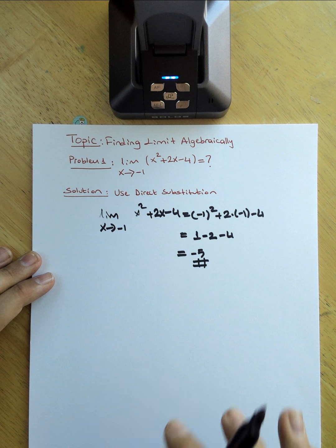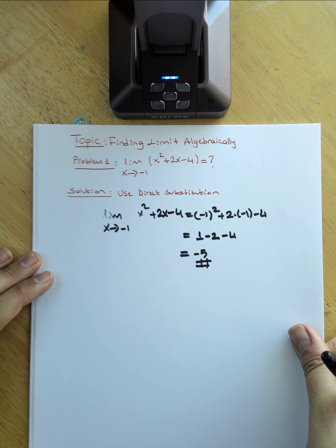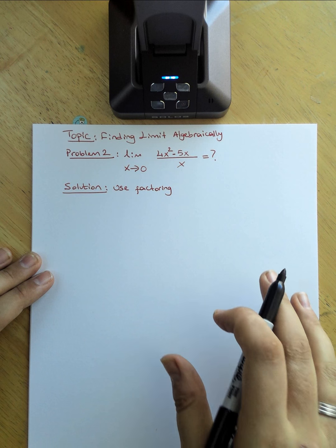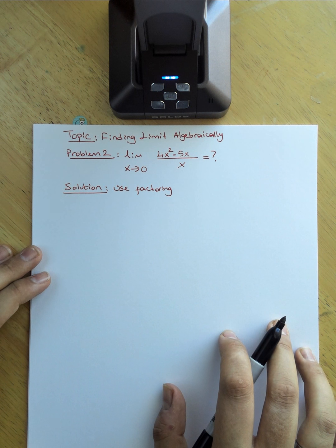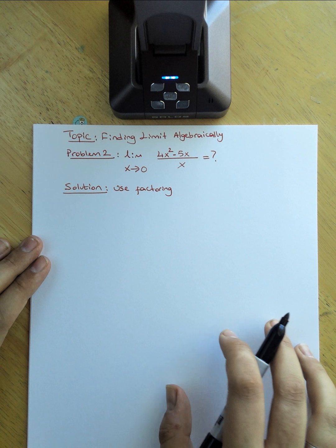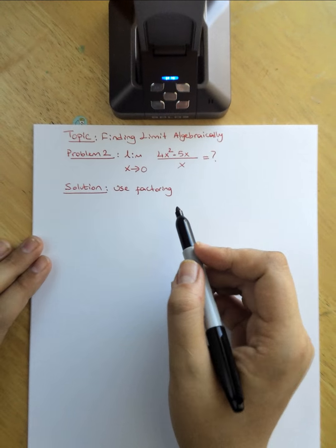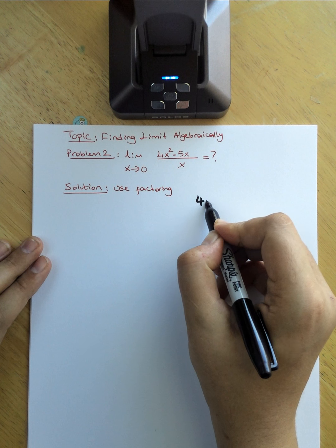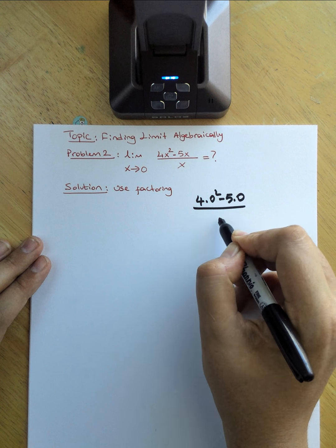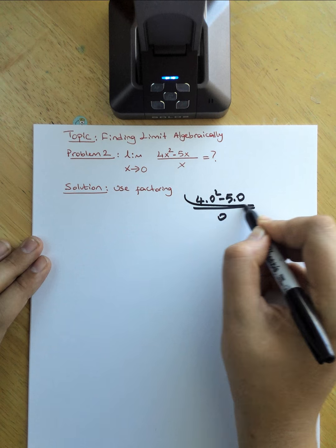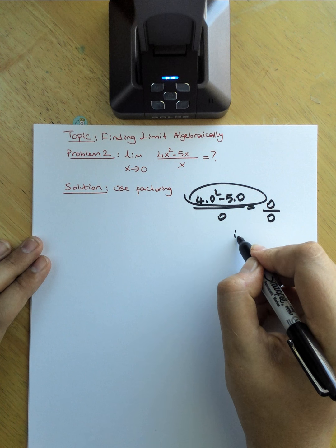So in this question, we just used the direct substitution method to calculate our limit. Let's move on to the second limit problem. In this case, I'm going to be using factoring. If I just substitute 0 into this limit, I'm going to get 4 times 0 squared minus 5 times 0 over 0, which gives 0 over 0 — an indeterminate form.